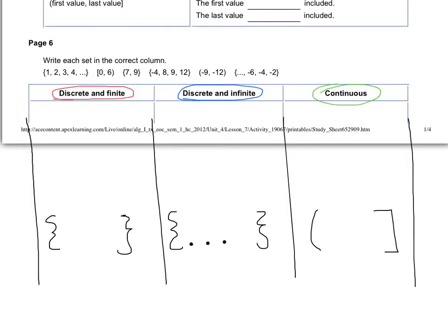Looking at the first one — {1, 2, 3, 4, ...} — it has the fancy brackets so that makes it discrete, and it has the dot dot dot so that makes it discrete and infinite, meaning the numbers just go on forever. The next one has a square bracket and a parenthesis, so that makes it continuous — it consists of every single number between 0 and 6, including 0.1, 0.2, 0.41, 0.432, and so on. That's why you get to use set notation.